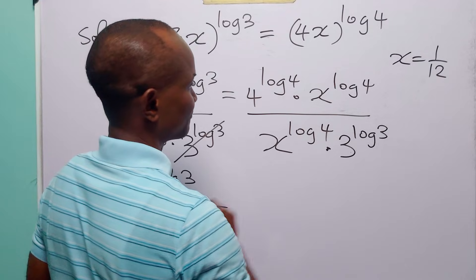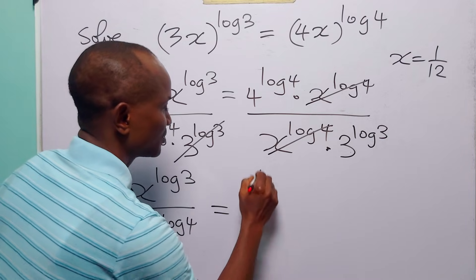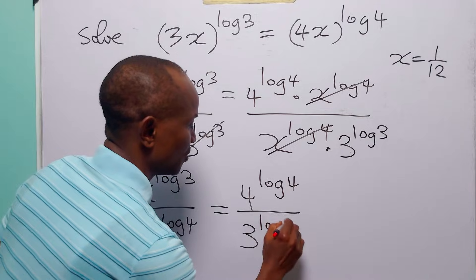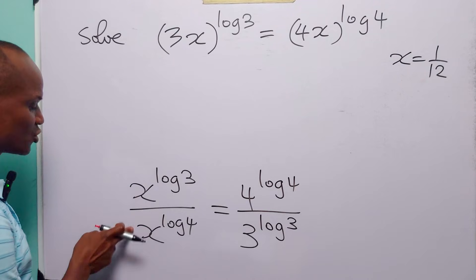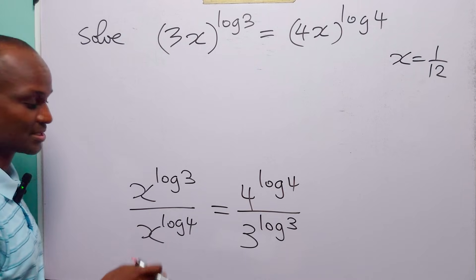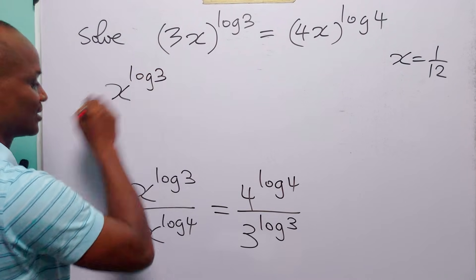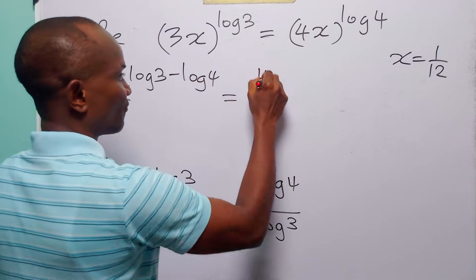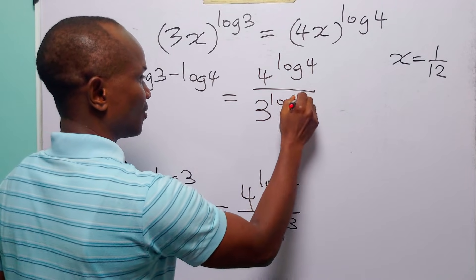On the right-hand side, this leaves 4 to the power log 4 divided by 3 to the power log 3. From the laws of indices, when two numbers with the same base divide, we subtract the exponents. So we have x to the power (log 3 minus log 4) equals 4 to the power log 4 divided by 3 to the power log 3.